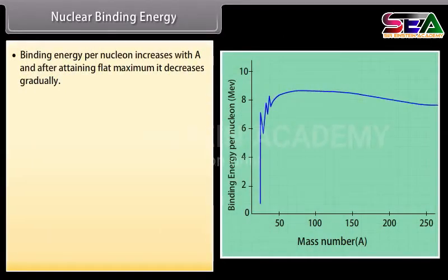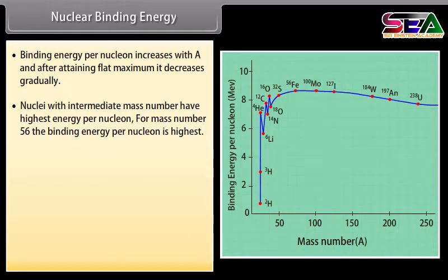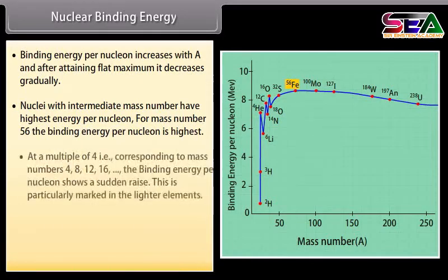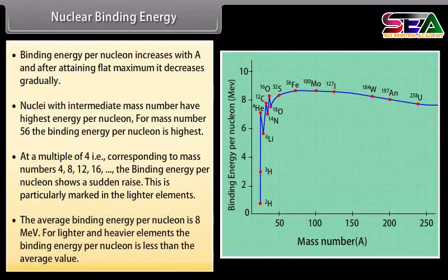From the graph, we note that binding energy per nucleon increases with A, and after retaining a flat maximum, it decreases gradually. Nuclei with intermediate mass numbers have the highest energy per nucleon. For mass number 56, the binding energy per nucleon is highest. At multiples of 4 (mass numbers 4, 8, 12, 16), binding energy per nucleon shows a sudden rise, particularly in lighter elements. The average binding energy per nucleon is 8 MeV; for lighter and heavier elements it is less than this average.